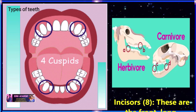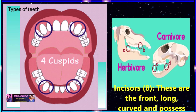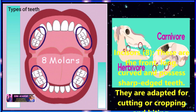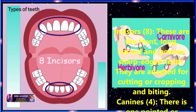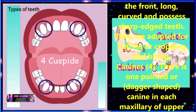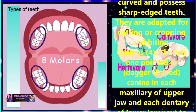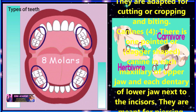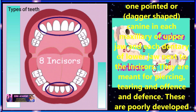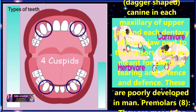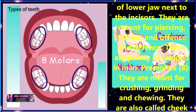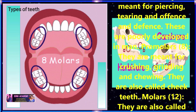Now let us discuss incisors — 8 in number — which are present in heterodont type of teeth. These are present at the front, long, curved, and possess sharp edges. They are adapted for cutting, cropping, and biting. There are 4 canines. These are one-pointed or dagger-shaped, one in each maxillary of the upper jaw and each dentary of the lower jaw, next to the incisors. They are meant for piercing, tearing, and offense and defense. These are poorly developed in man.